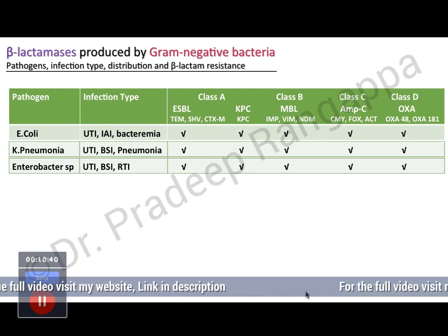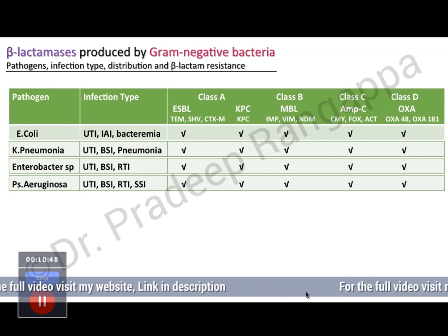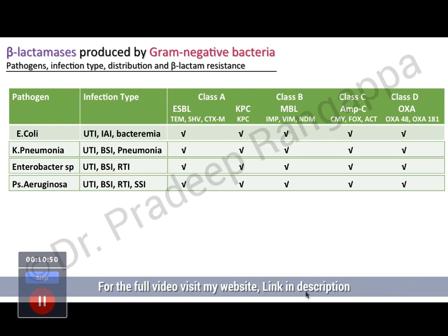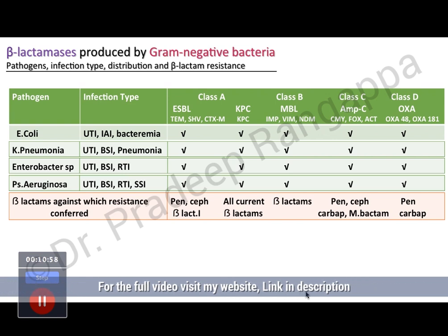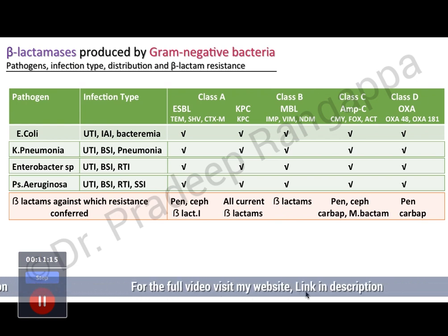Class C and D are the ones where we need knowledge about which antibiotics to deliver. Pseudomonas, which causes UTI, bloodstream, respiratory tract, and skin and soft tissue infections, also produces all these classes. Basically all the bugs we deal with in the ICU today have the potential to produce all these sorts of enzymes. Pretty much all the typical beta-lactams we would use — penicillins, carbapenems, or cephalosporins — most are resistant.